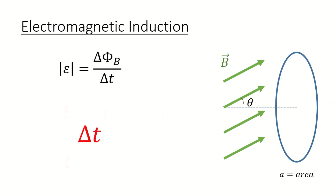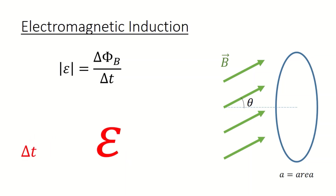Take a look at delta t in the equation. If delta t is large, this means that the change in the magnetic flux is taking place slowly, so the induced emf will be small. If delta t is small, however, this means that the change is taking place quickly, and thus you get a large induced emf and a large induced current.